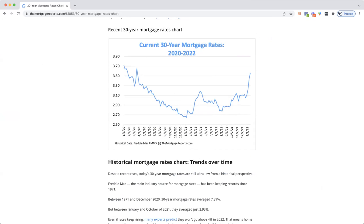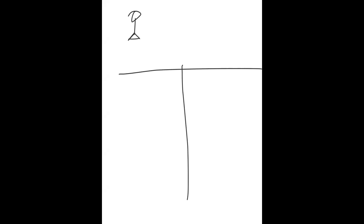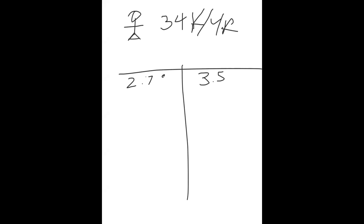What does that mean? Pay close attention, because without this, a lot of this won't make sense. Sally earns $34,000 a year from Starbucks. The post-pandemic interest rate is 3.5 percent and the pandemic-era rate is 2.7 percent — those are the two interest rates we're comparing.